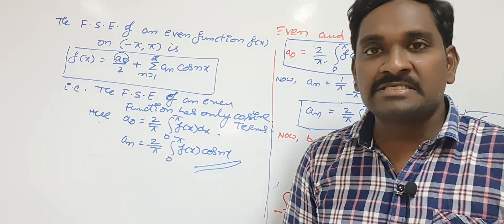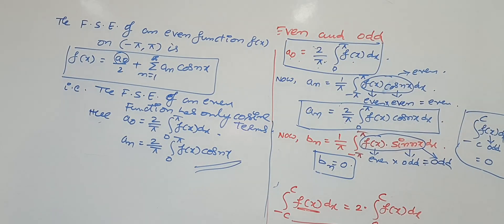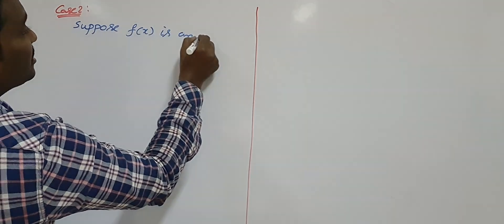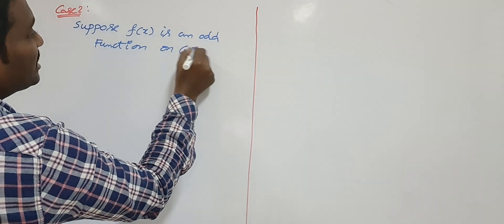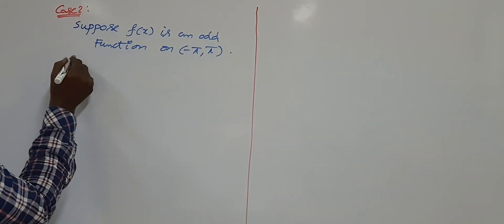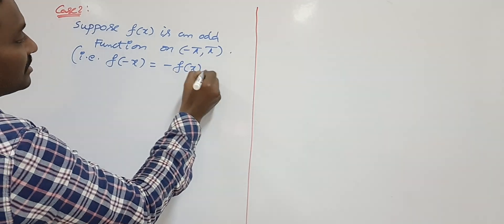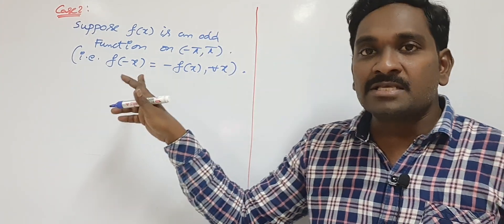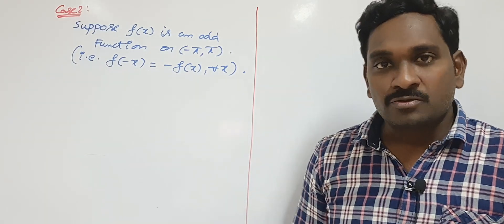Similarly, we look at the Fourier series expansion of f(x) when f(x) is an odd function. Case 2: suppose f(x) is an odd function on the open interval (-π, +π). What is meant by odd function? If f(-x) = -f(x) for all x, it is an odd function. If f(-x) = +f(x) it is even; if f(-x) = -f(x) it is odd.